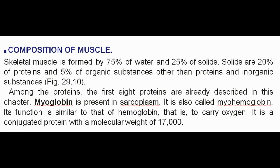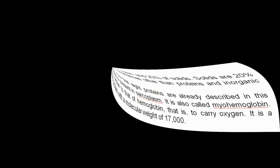Composition of Muscle: Skeletal muscle is formed by 75% of water and 25% of solids. Solids are 20% of proteins and 5% of organic substances other than proteins and inorganic substances. Among the proteins, the first 8 proteins are already described in this chapter. Myoglobin is present in sarcoplasm. It is also called myohemoglobin. Its function is similar to that of hemoglobin, that is, to carry oxygen. It is a conjugated protein with a molecular weight of 17,000.